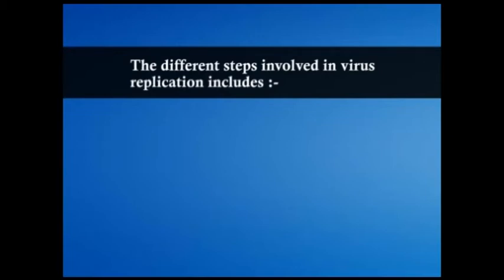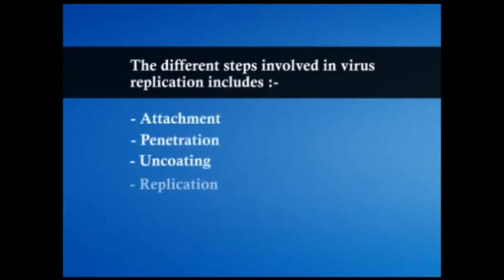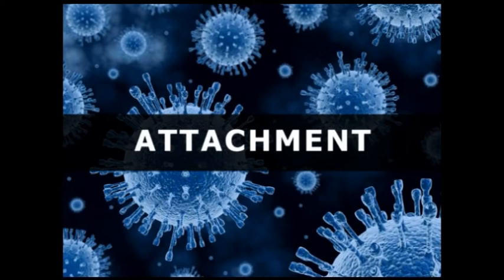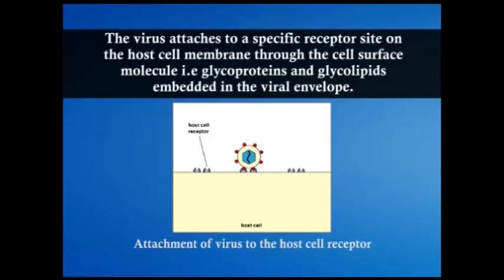Generally, all viruses enter the body through the epithelial surfaces of the respiratory tract, alimentary tract, and the reproductive tract. Sometimes these viruses can also enter through wounds in the skin. The different steps involved in virus replication include attachment, penetration, uncoating, replication, assembly, and finally release.